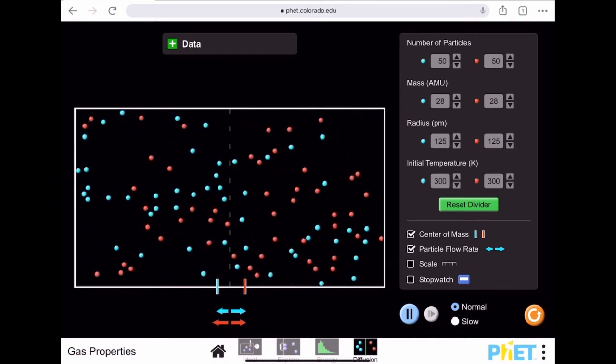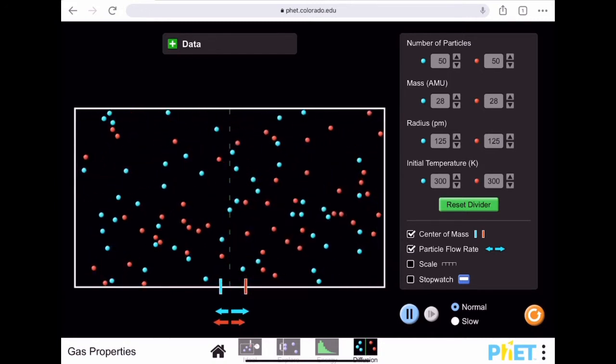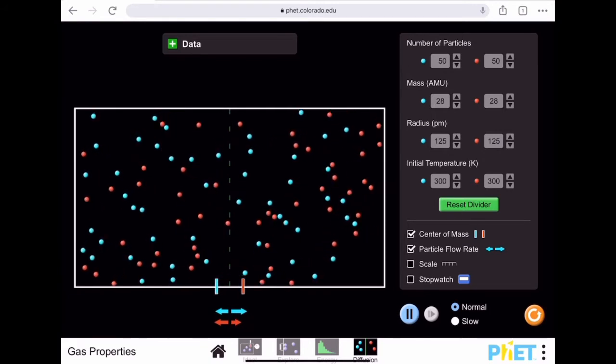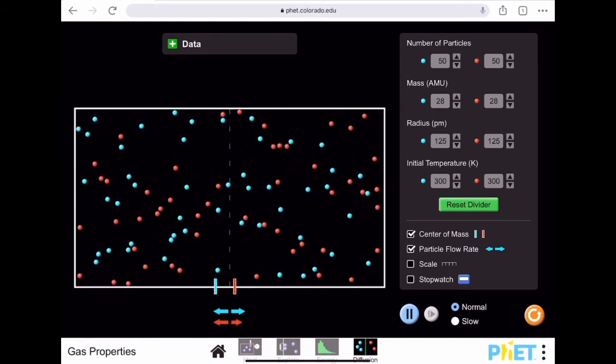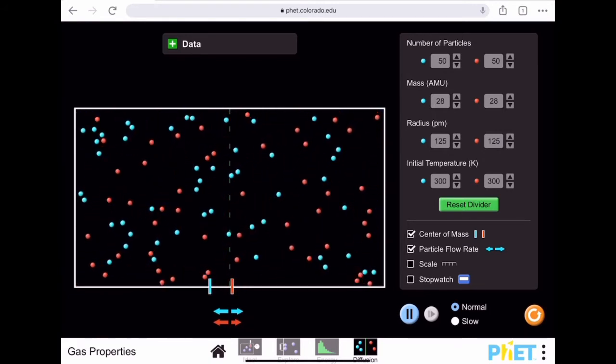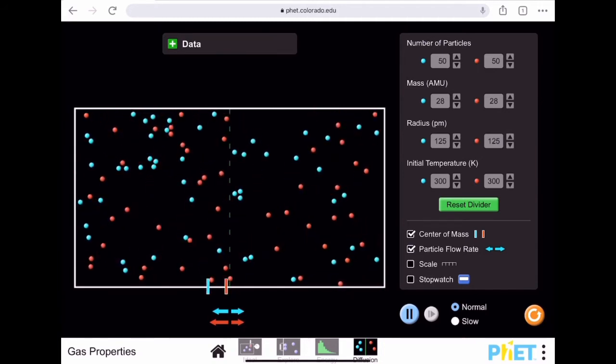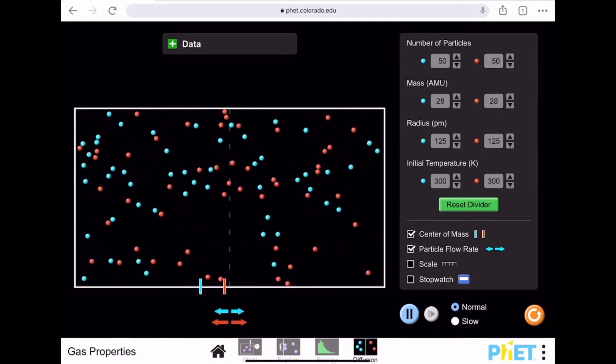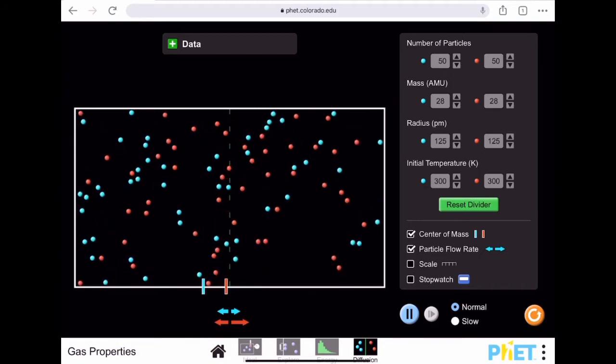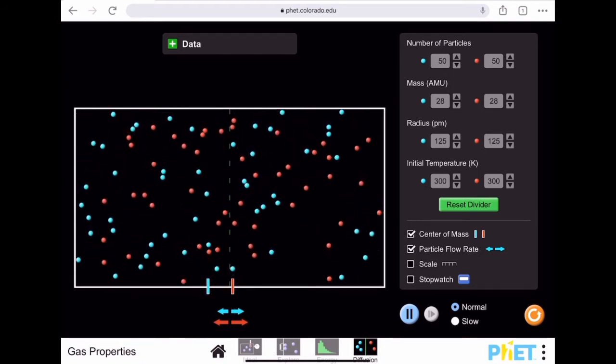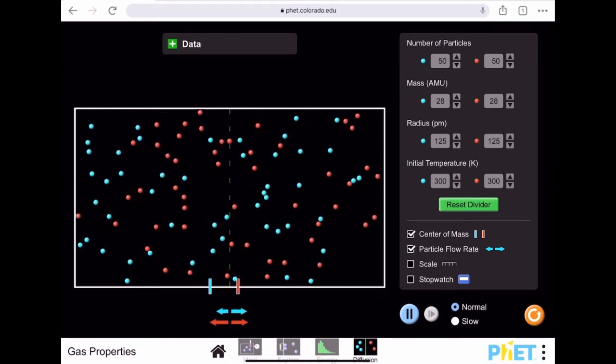After a period of time, those gas particles will find an equilibrium position where what was once two different sides of a container now is an equal dispersion. There will be moments where it's a little heavy on one side and moments where it's a little heavy on the other side, but the gas molecules will adapt.